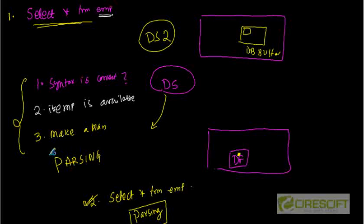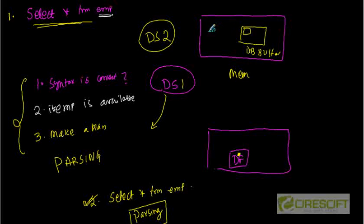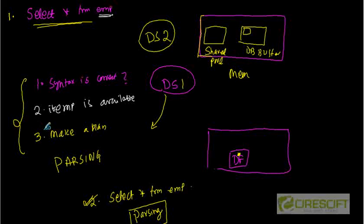Is it possible to reuse the parsed representation of this query? Dedicated server one got the parsed result of 'SELECT * FROM EMP'. We already have a memory structure storing database buffer blocks — is there any way we can store the parsed representation in memory? So that the second time a similar query comes, we check memory first. If we find a parsed representation, we use that instead of reparsing. That is the goal of the shared pool.